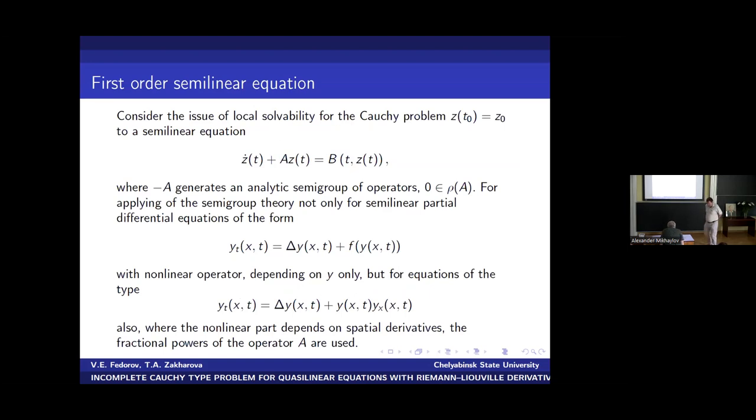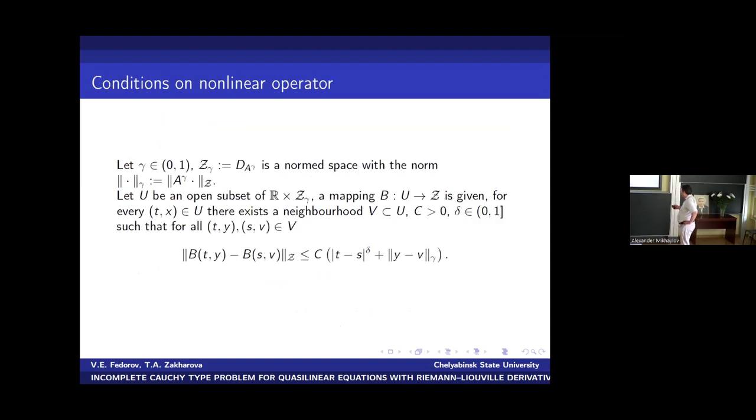Firstly, I recall the situation for considering local solvability for the Cauchy-Type Problem for a semilinear equation of this form, where minus A generates an analytic semigroup of operators, and zero belongs to the resolving set of operator A. For applying the semigroup theory not only for semilinear partial differential equations of such form, where nonlinear operator depends only on unknown function y, but for equations of this type where nonlinearity depends on spatial derivatives also.